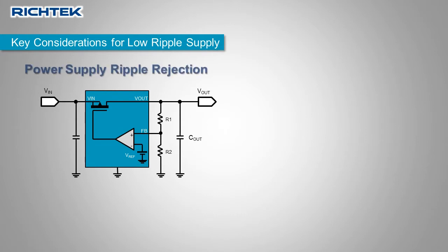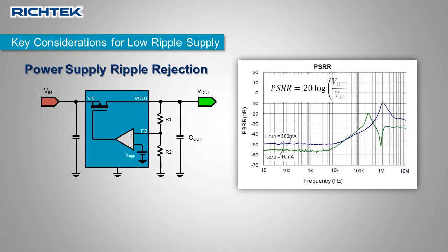PSRR stands for power supply ripple rejection. The LDO PSRR value quantifies how well an LDO can reject input supply ripple at a certain frequency, to keep the output voltage free of noise and ripple. It is expressed as VOUT over VIN, so lower PSRR values are better.